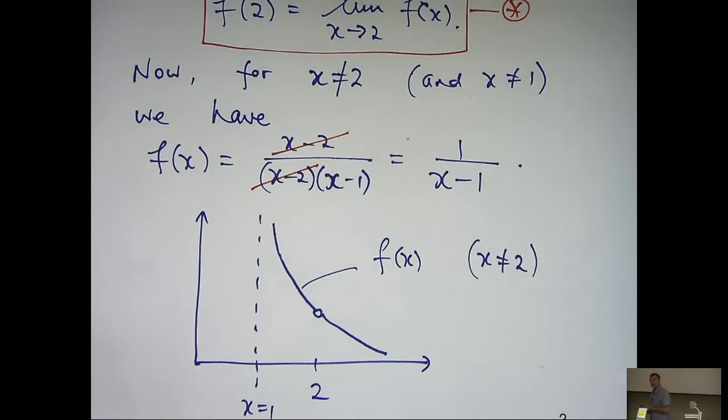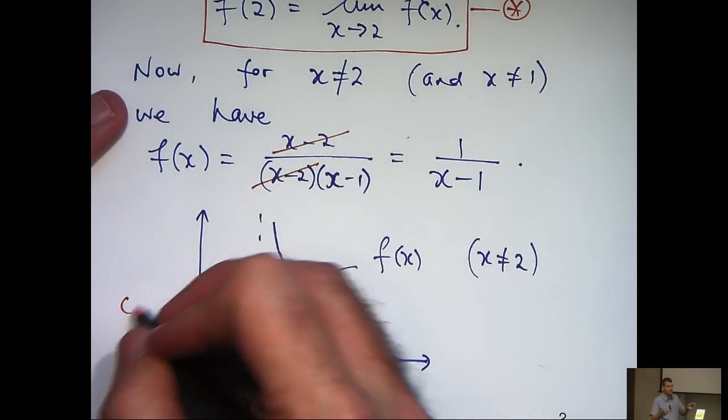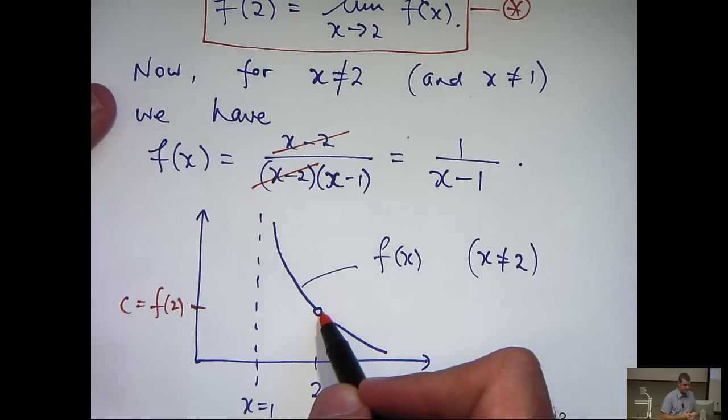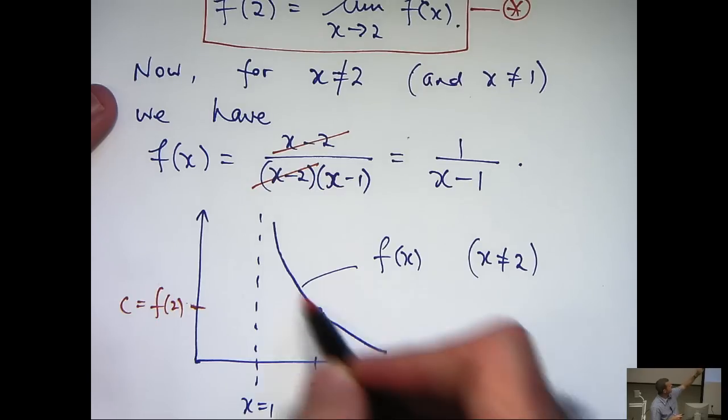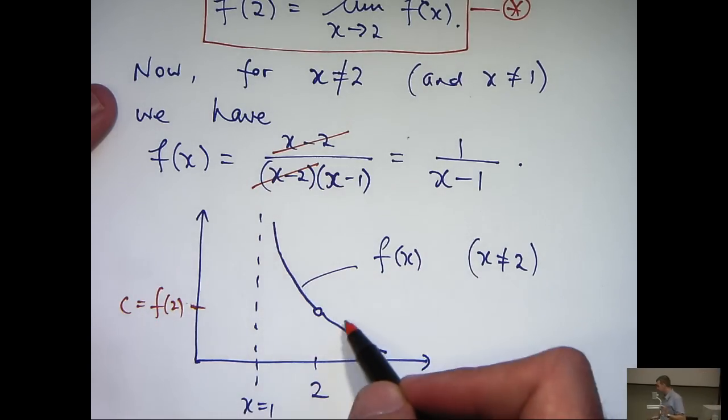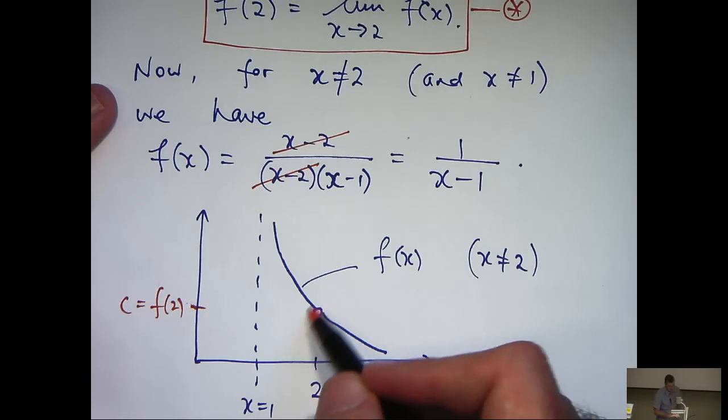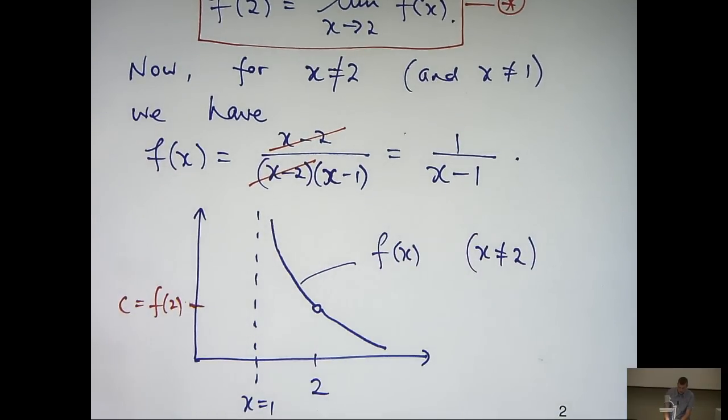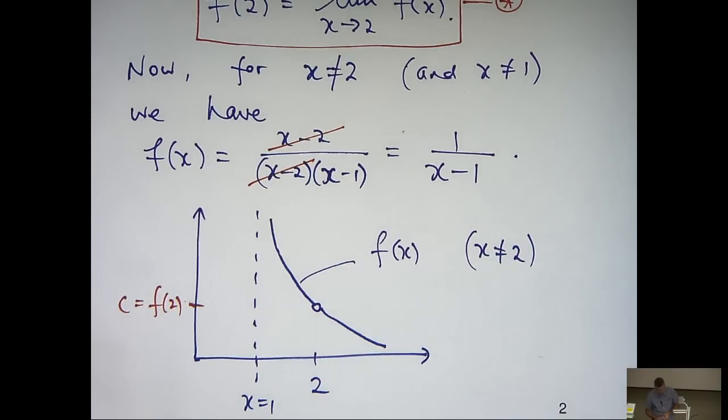Now, what we are trying to do here is to plug this little hole by giving c some value such that it will make the whole graph continuous. Okay, it's already continuous here and here. But at x equals 2, we need to define it so we can plug this hole and make the whole part of this curve continuous.